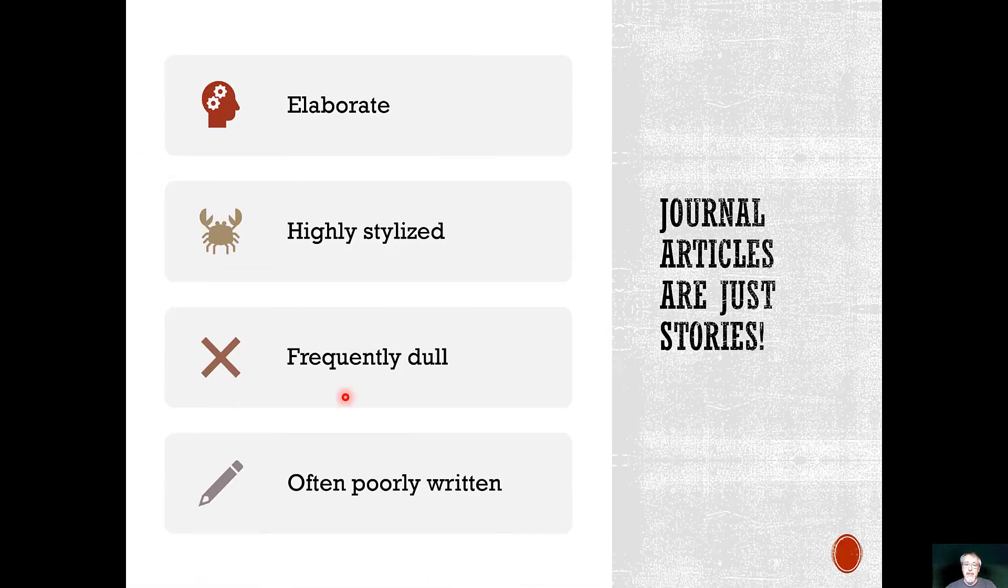Journal articles can be elaborate, they're highly stylized, they're full of jargon, which makes them frequently dull and difficult to understand. And frankly, they're very often poorly written. But at their heart, when you break through all of the jargon, when you break through all of that high style, all the science-y stuff, articles aren't just stories. They're the stories that scientists tell other scientists. The stories researchers tell other researchers. The stories scholars tell other scholars.